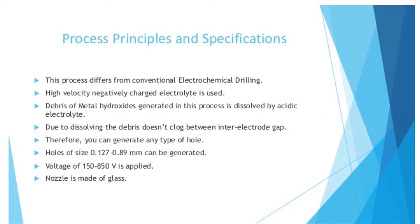Process principle and specification. This process differs from conventional electrochemical drilling. High velocity, negatively charged electrolyte is used. Debris of metal hydroxide generated in the process is dissolved by the acidic electrolyte. Due to dissolving, the debris does not clog the inter-electrode gap. Therefore, you can generate any type of hole.